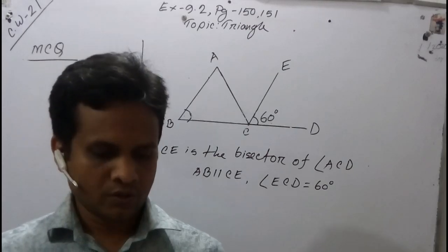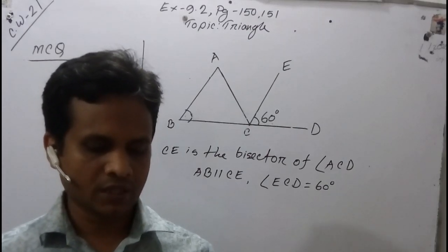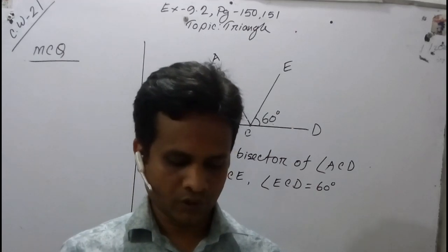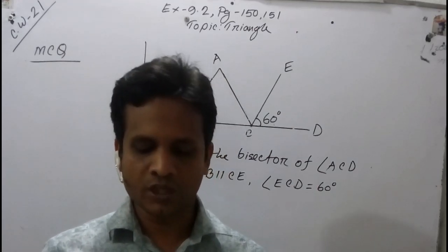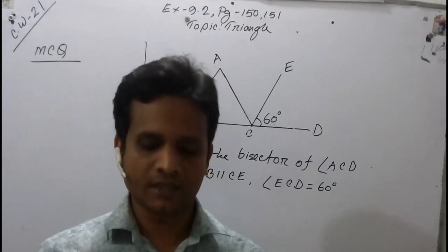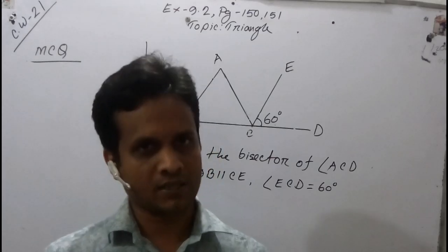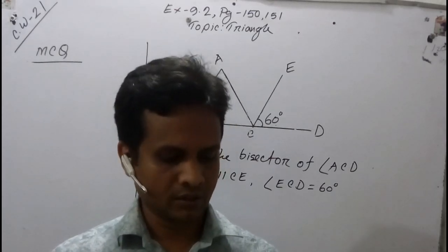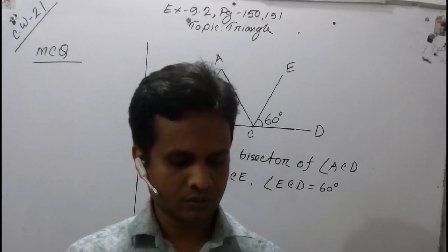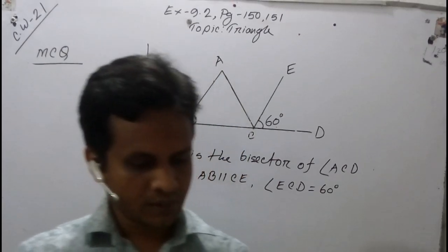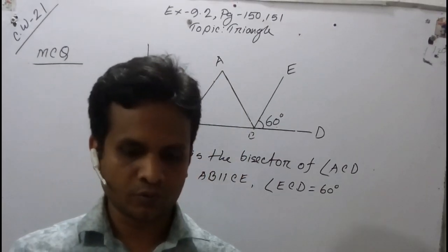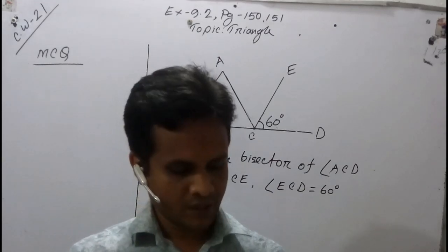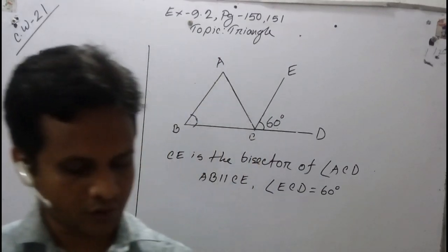You have already learned the previous lesson, term number four: the sum of the length of any two sides of a triangle is greater than the length of the third side. Today I will discuss something similar which you have already learned.